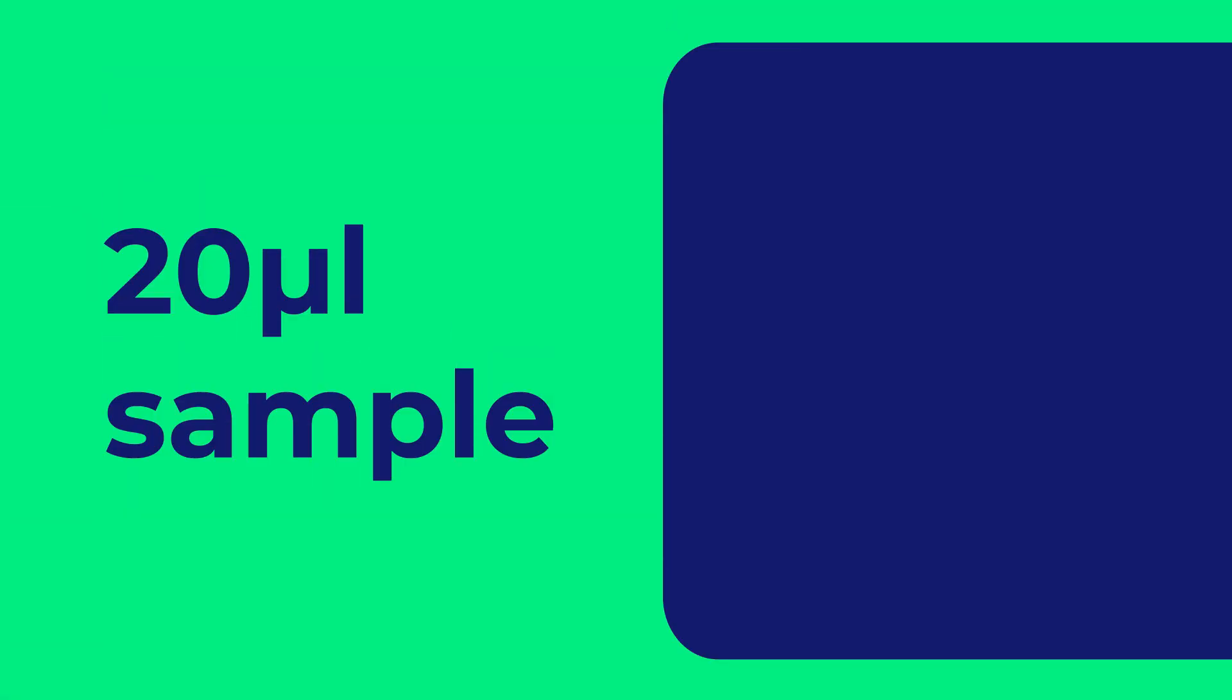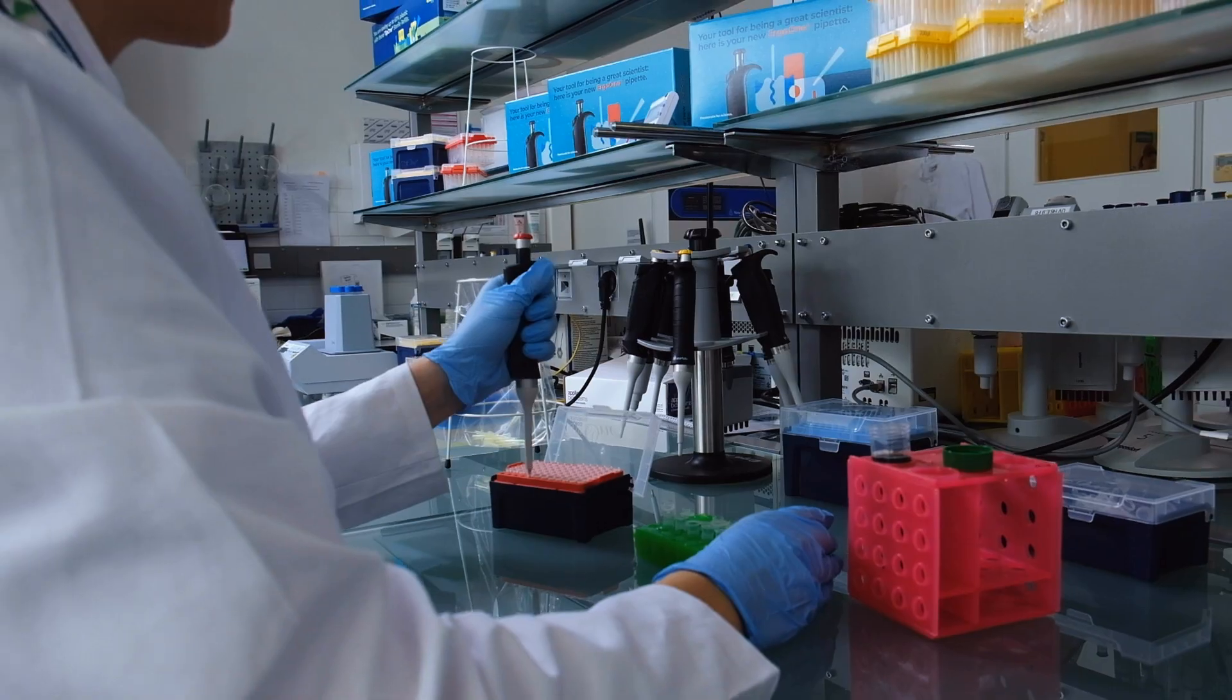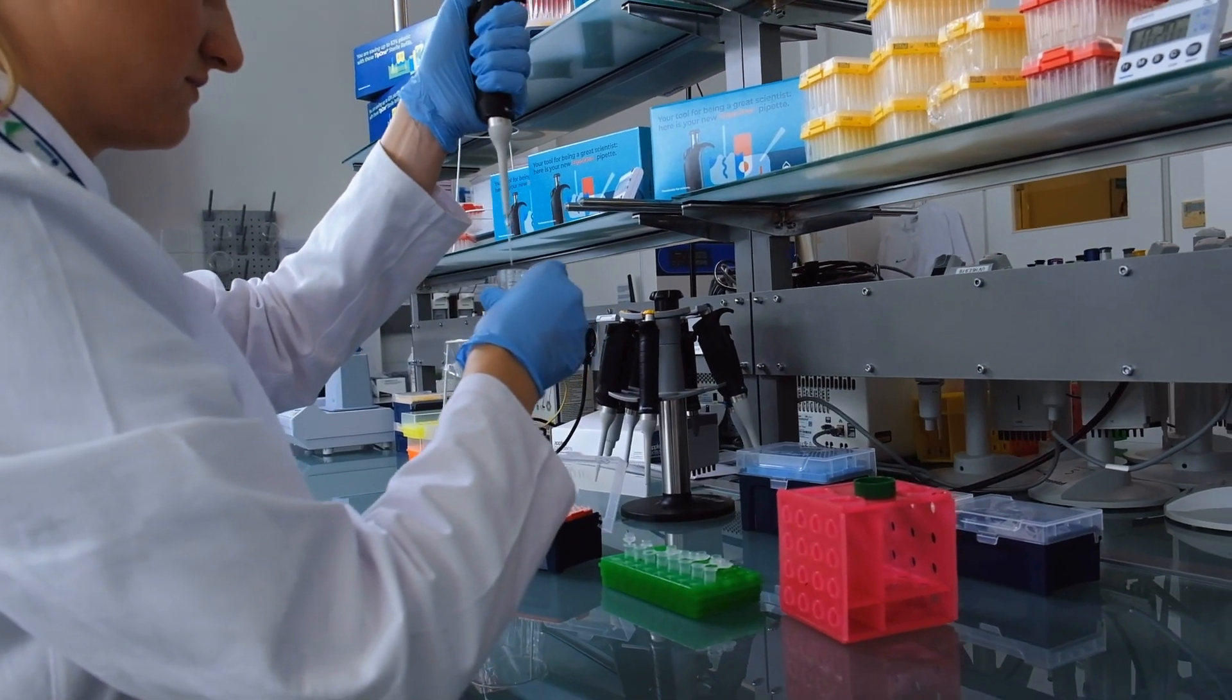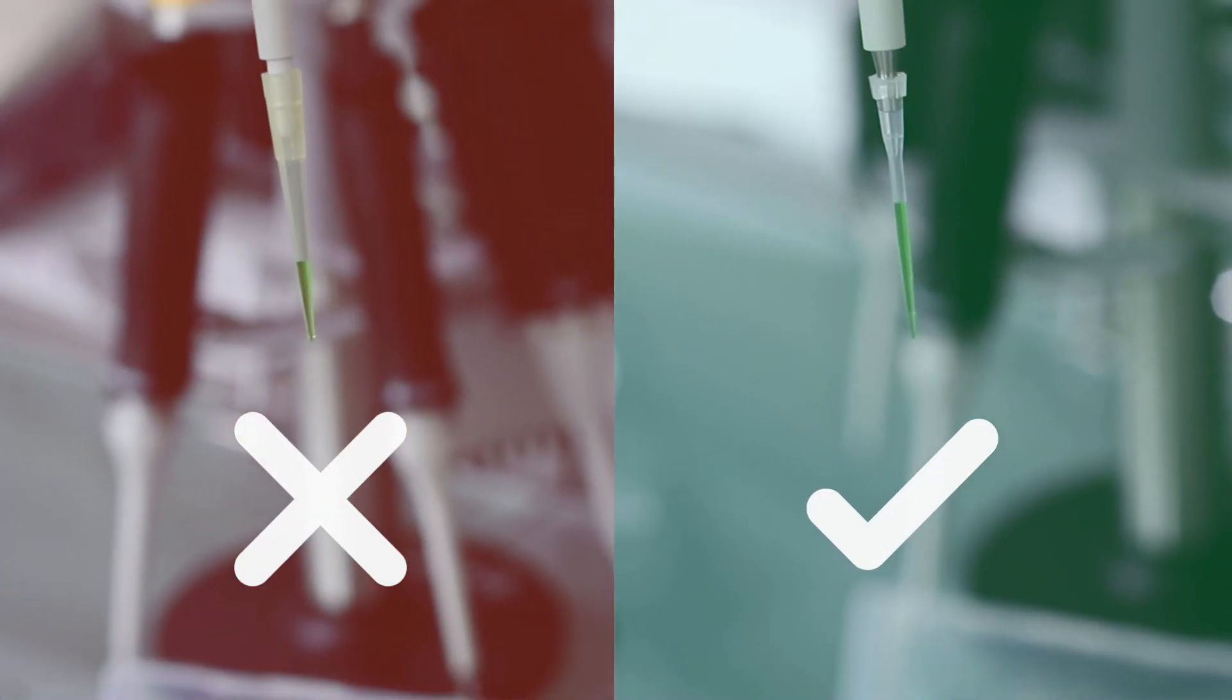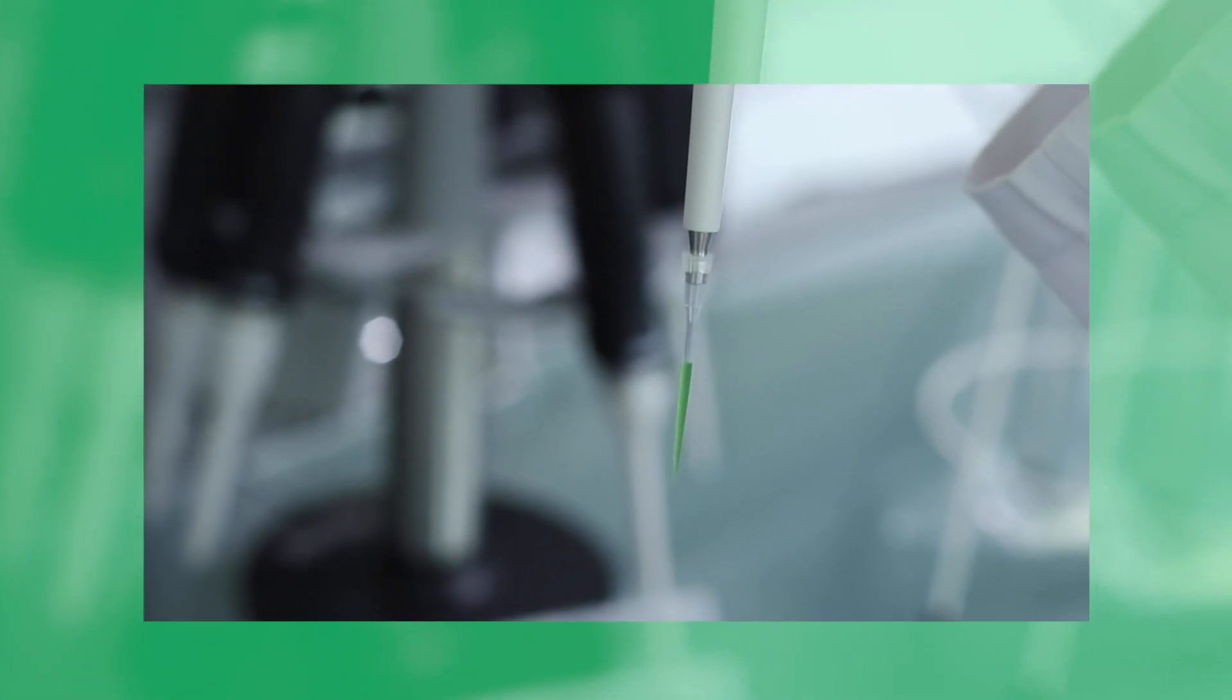For the most accurate results, always try to use a pipette that has a maximum volume closest to the volume of the sample you're pipetting. When it comes to finding me my perfect match, aim for a tip that allows you to dispense your sample with as little dead air space as possible inside the pipette tip.